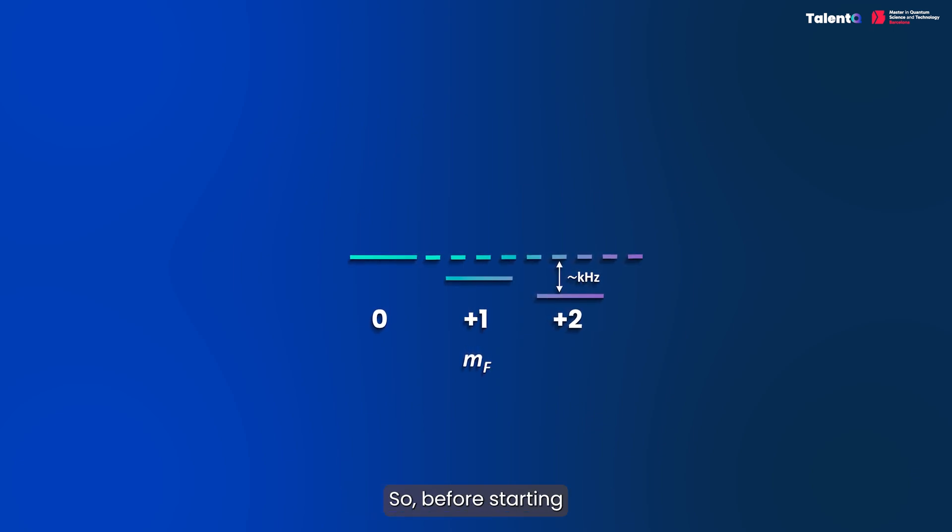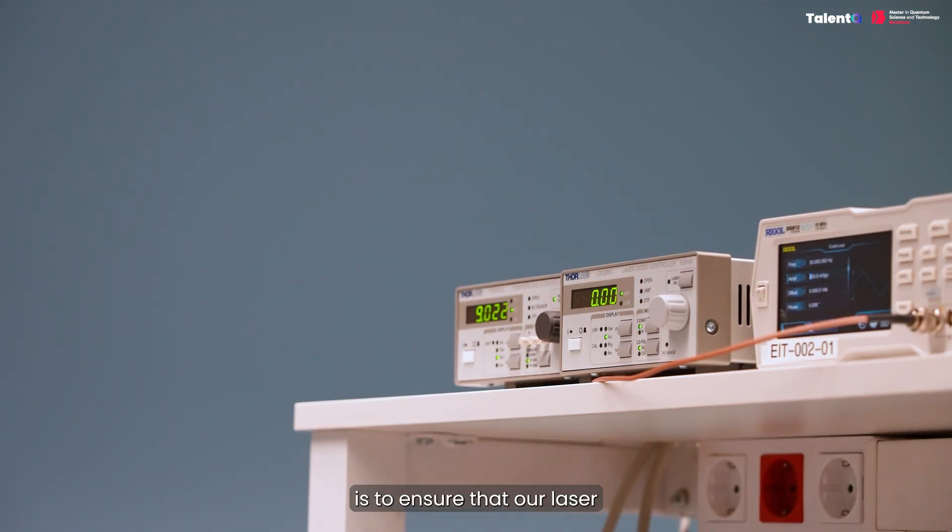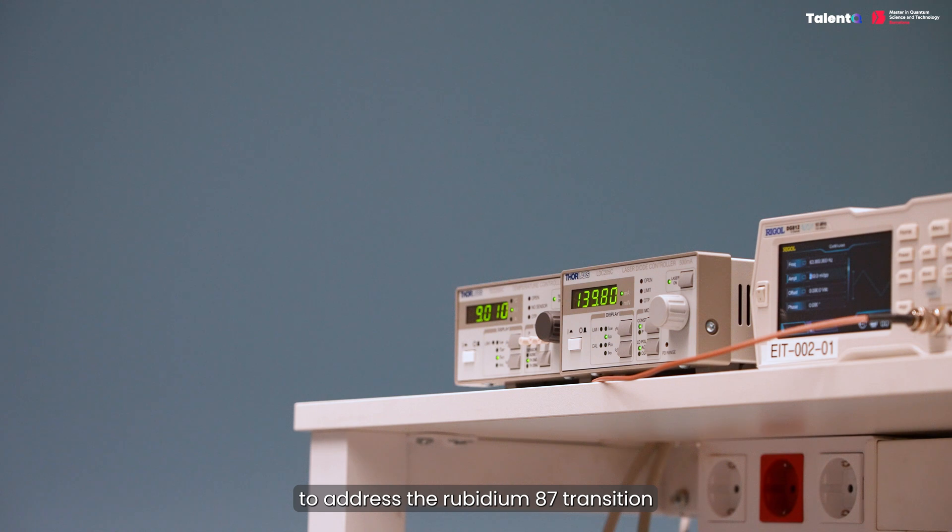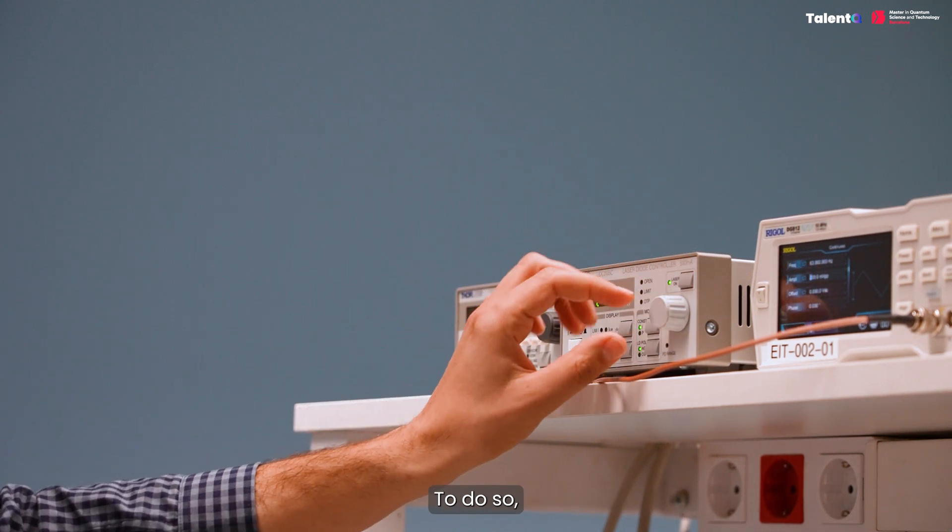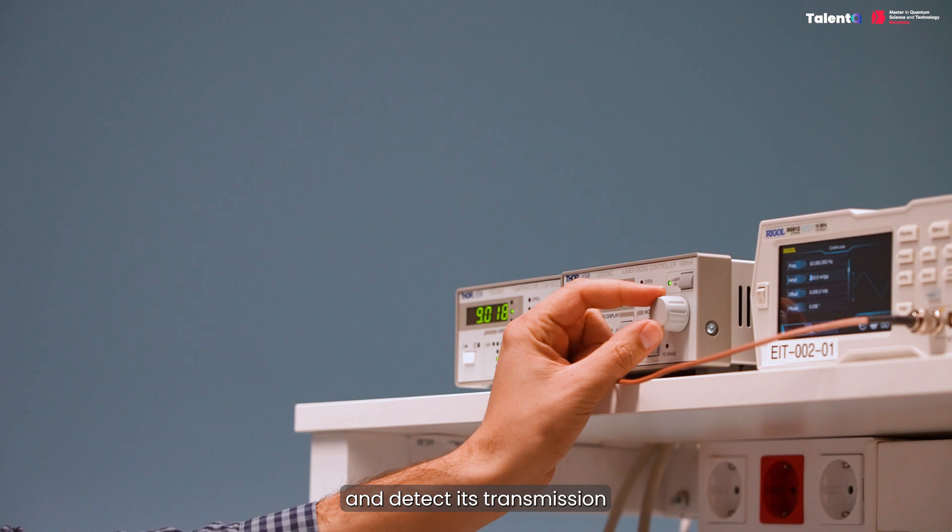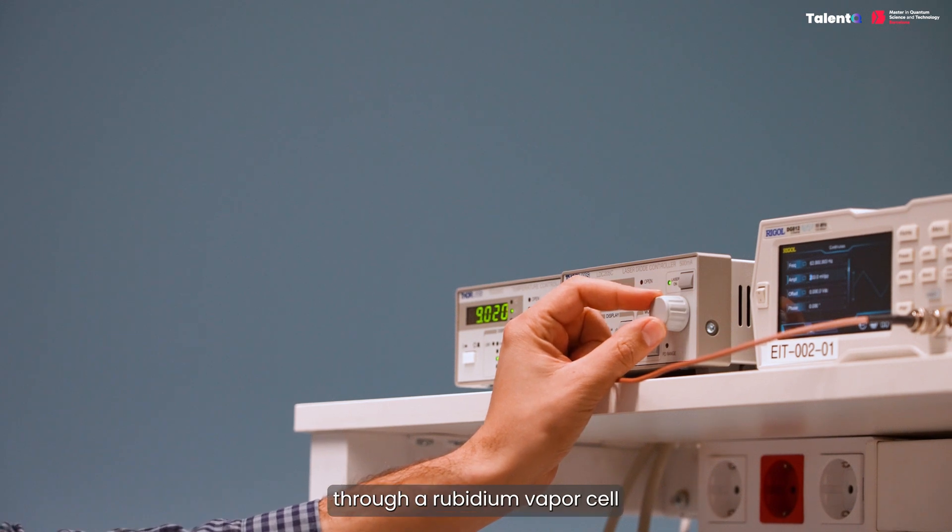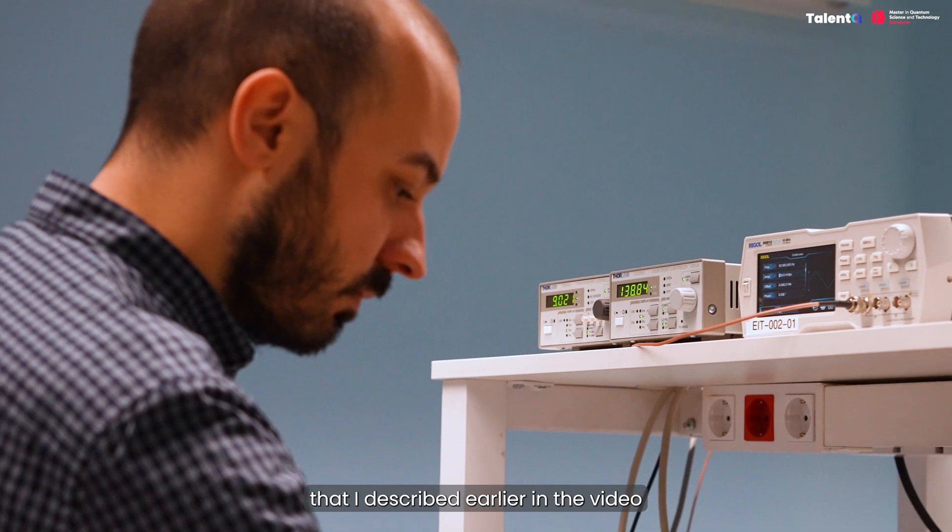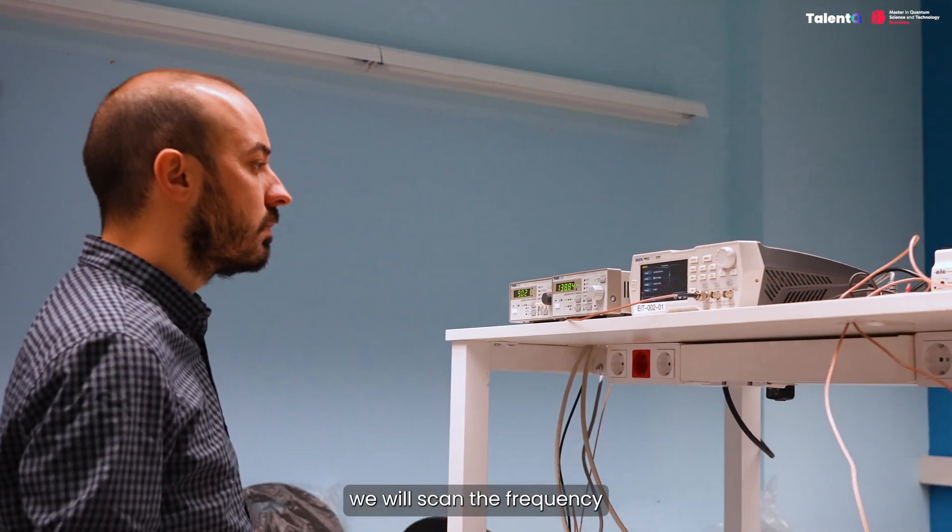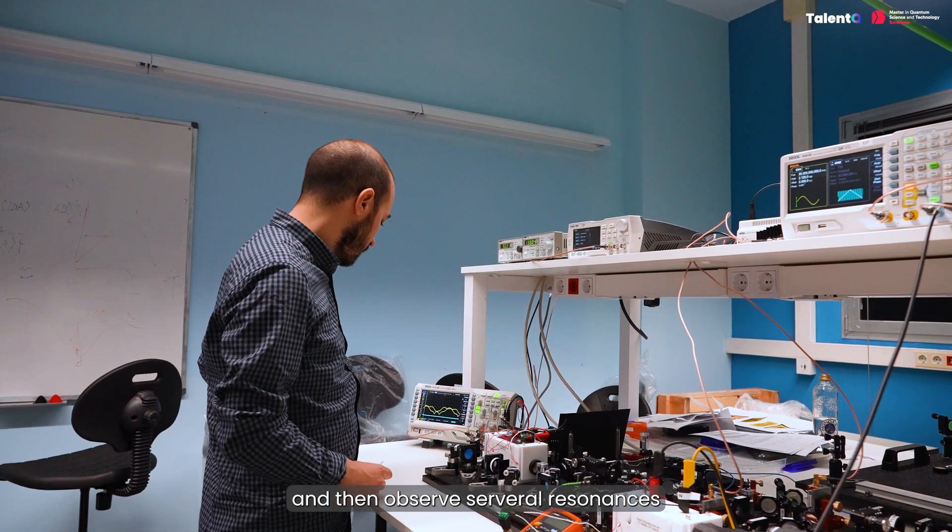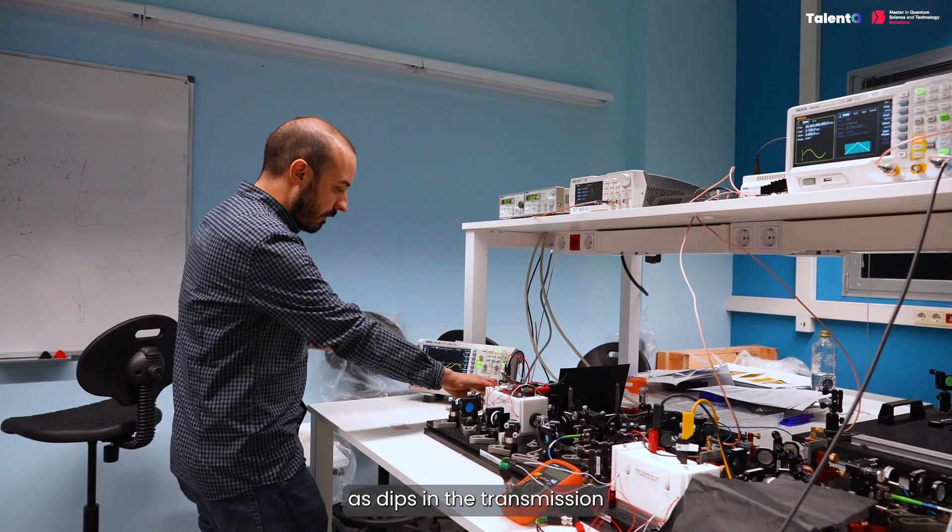So before starting the actual experiment, the first step is to ensure that our laser is at the right frequency to address the Rubidium 87 transition. To do so, we will send a laser beam into the Rubidium spectroscopy module and detect its transmission through a Rubidium vapor cell. This is the situation that I described earlier in the video, and to measure the spectrum, we will scan the frequency of the laser over a range of several gigahertz and then observe several resonances as dips in the transmission.